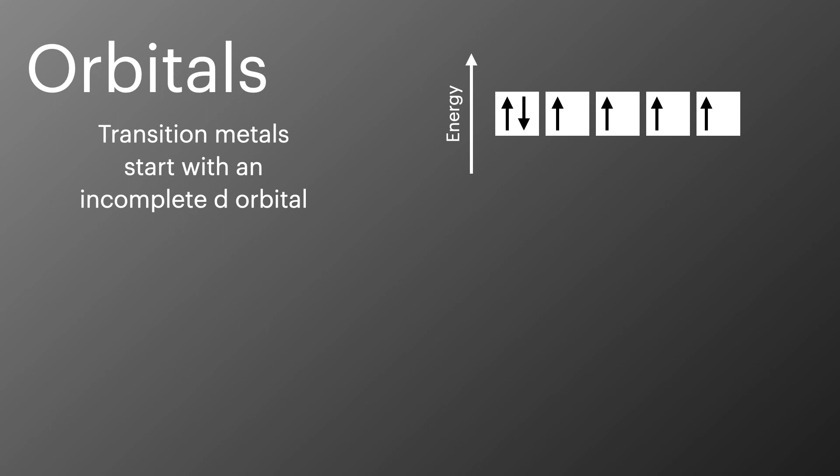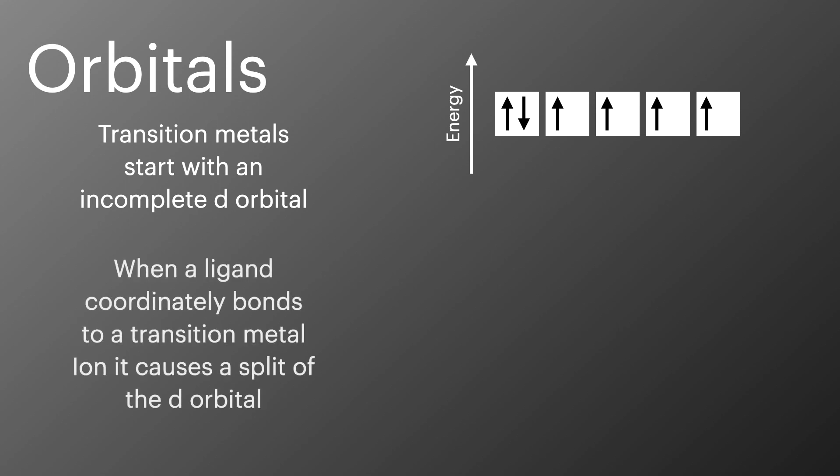If we remember back to the first lesson on transition metals, one of the things that we said about them is that they have a partially filled or incomplete d-orbital. When a ligand coordinately bonds to a transition metal, it causes a split in this d-orbital, causing two sub-orbitals to become higher in energy or in an excited state, and leaving three sub-orbitals at a lower energy or in a ground state.